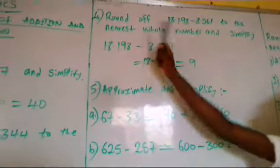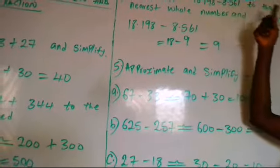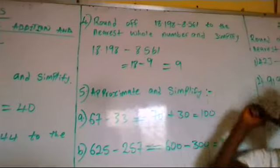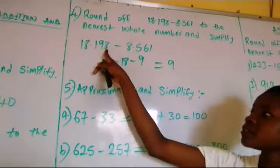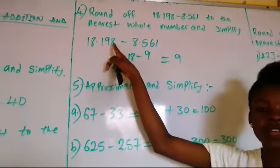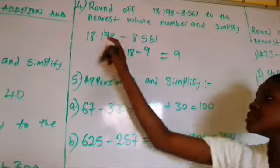So we have number 4. We round off 18.198 minus 8.561 to the nearest whole number and simplify. Remember, the whole number is before the decimal. So to round this down, we have to round this approximately. So 8 is bigger than 5, we round it up to 1. Put the 1 in the 9, which is now 10.